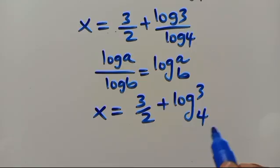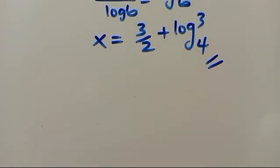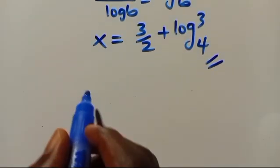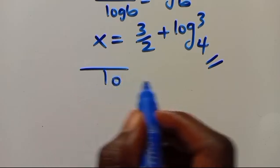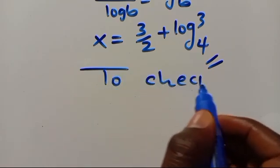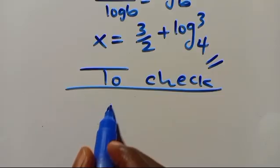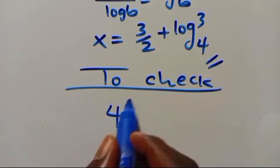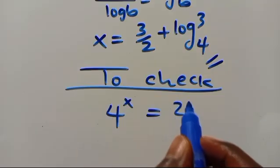So the value of x is 3 over 2 plus log base 4 of 3. Let us now check: we have 4 to the power of x equals 24.